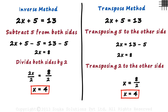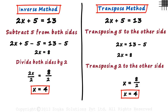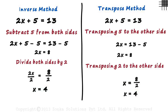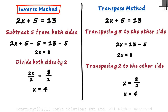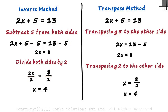We can see that we get the same answer using both methods. The transpose method is actually the same as the inverse operations method — just that instead of subtracting 5 from both sides, we transpose 5 to the other side. It's the same thing, as 5 and minus 5 cancel out and all we are doing is subtracting 5 from the right hand side. So we are avoiding a couple of steps. In the inverse operations method, we use more terms to eliminate terms on the left hand side; here we just transpose them to get the same result.